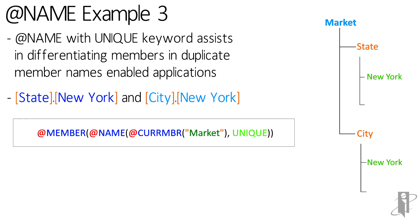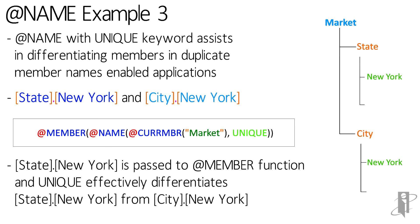So if the current member of Market being calculated is a New York State member, the qualified member name State.NewYork gets passed to the function. The UNIQUE keyword effectively differentiates State.NewYork from City.NewYork. As noted earlier, if the member names do not have any duplicates in the outline, only the member name gets passed to the function.